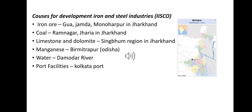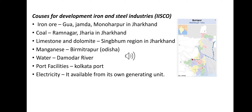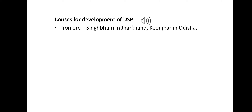Water in large quantity is available from the Damodar River. Port facility is provided by the Kolkata port, and electricity is available from its own generating unit. The ready market for iron pipes and various other steel products is available in Kolkata and the surrounding sub-areas.